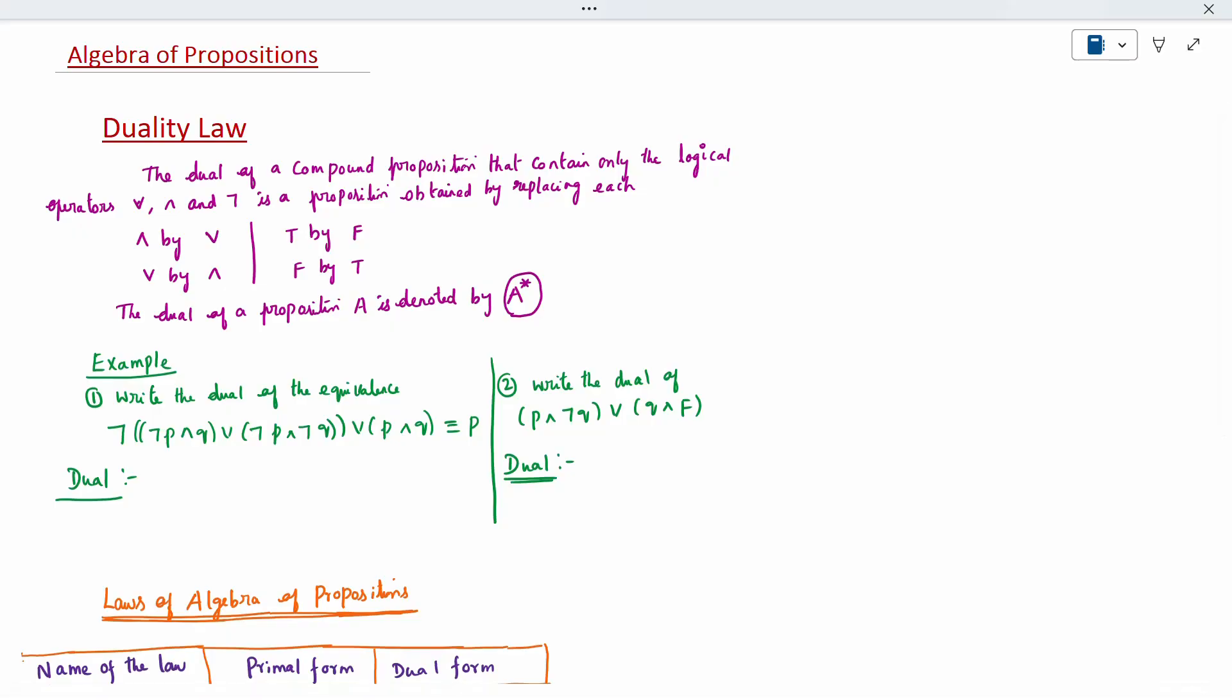I have given two examples. Write the dual of equivalence. For the first case, the dual is very easy. Negation as it is, the bracket and all, you should not do anything. Negation of p, only you should not change the variable, only proposition you should not change it. Instead of conjunction, I am going to write disjunction.